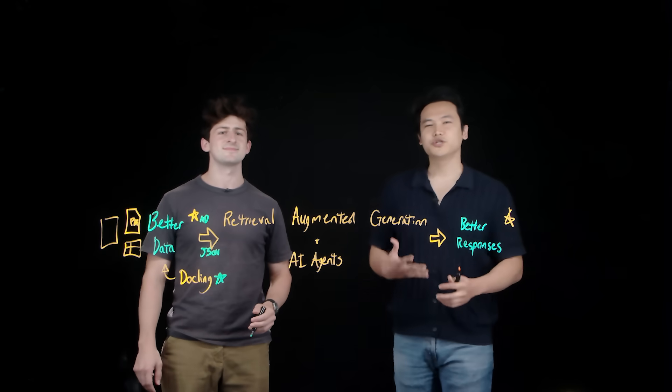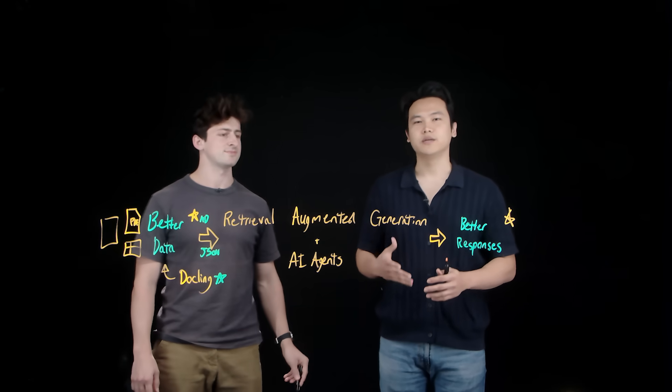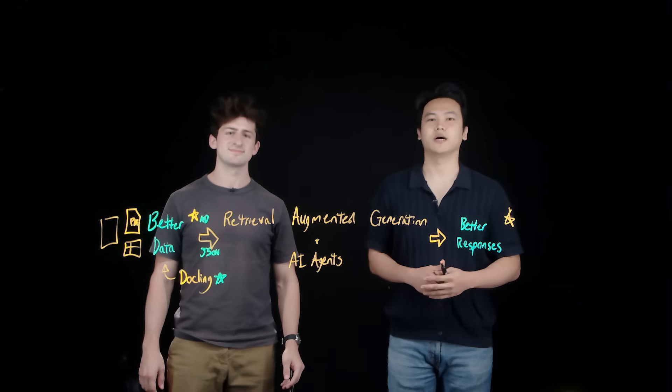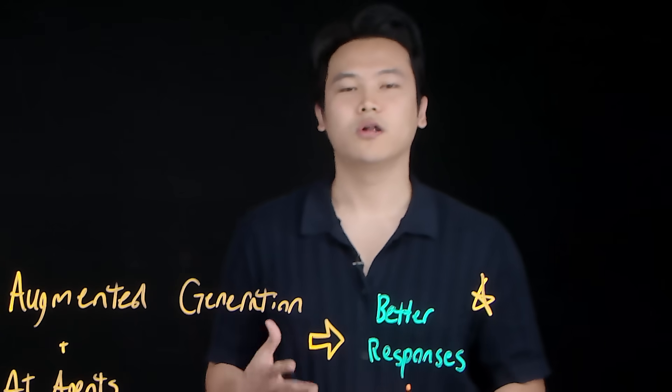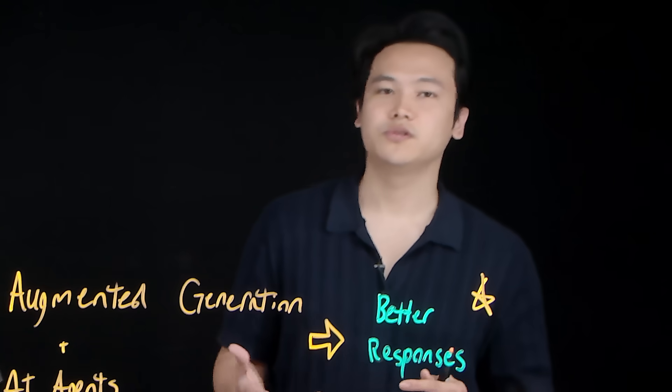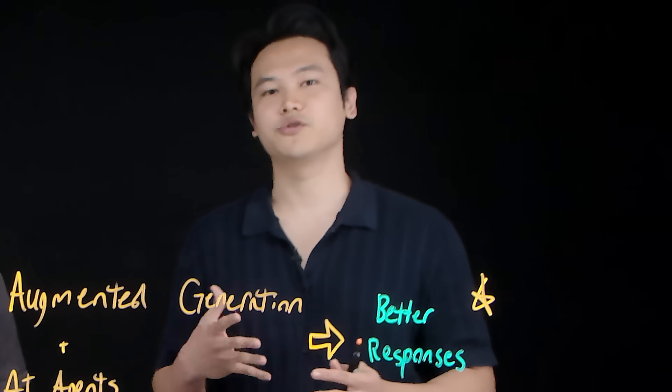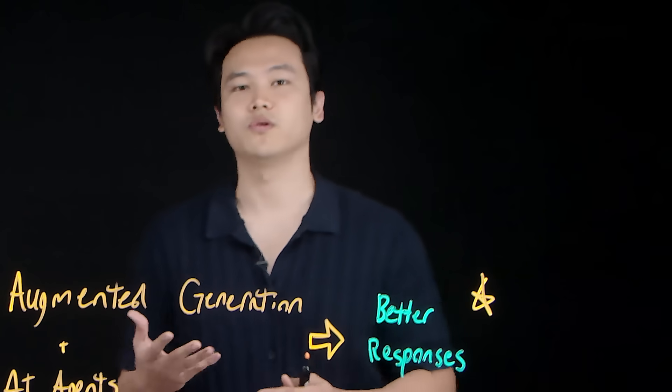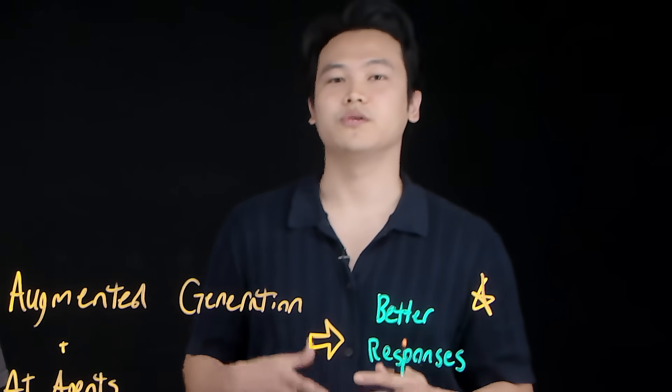That's right. The real challenge in RAG or agentic AI isn't building the agent, but curating the knowledge and the context behind it. Today, you'll learn all about Dockling's document processing features from the Dockling MCP server to structured information extraction and multimodal RAG, all features that you can start using today.